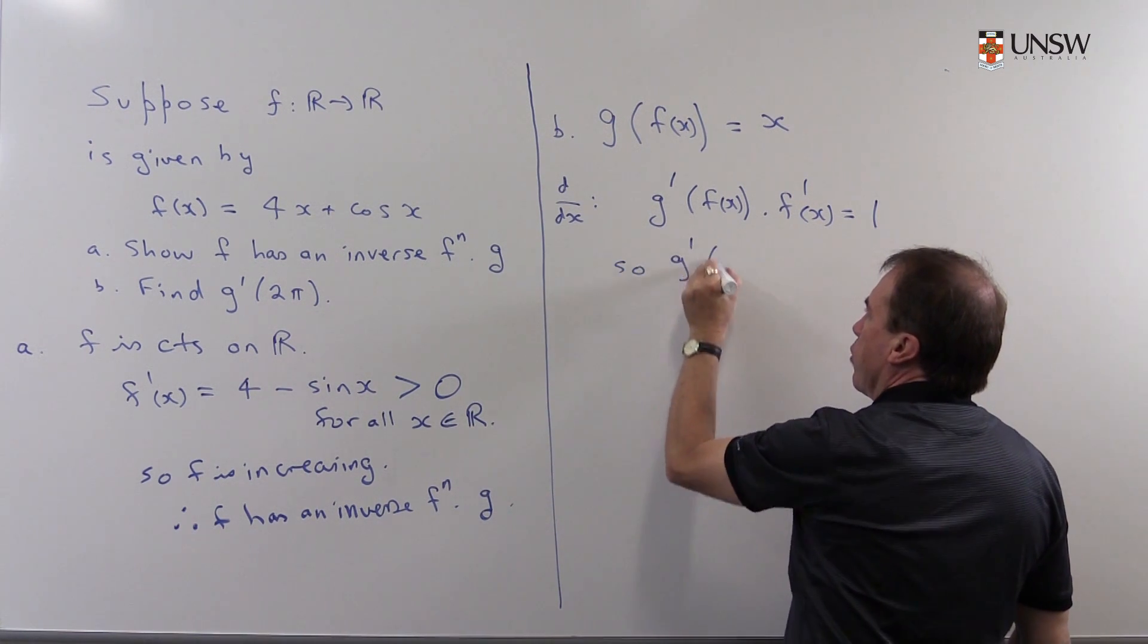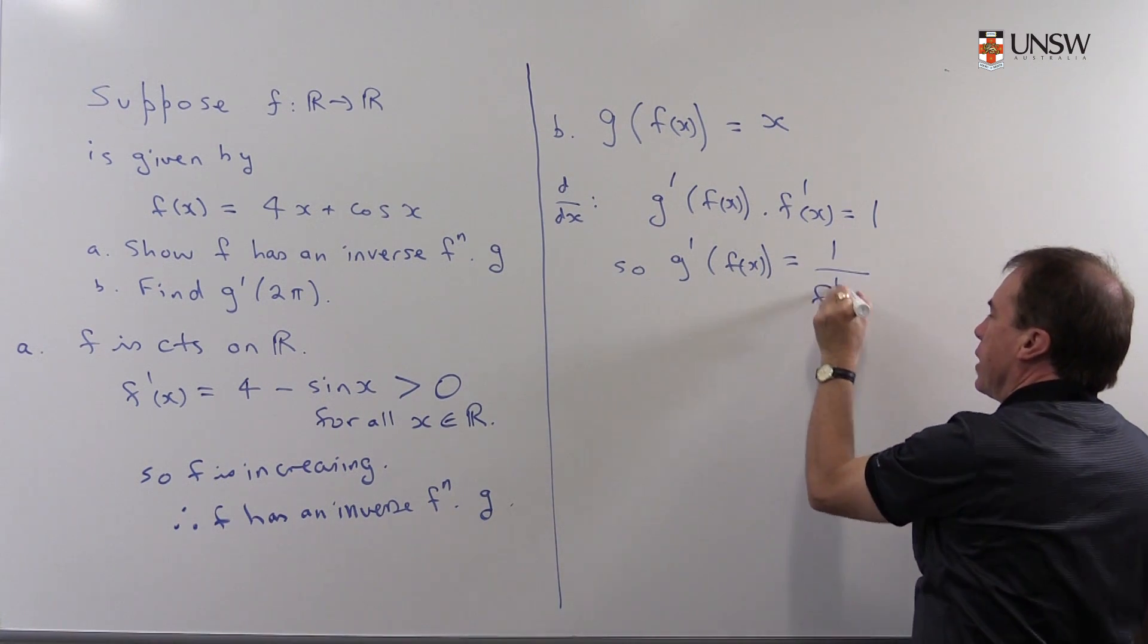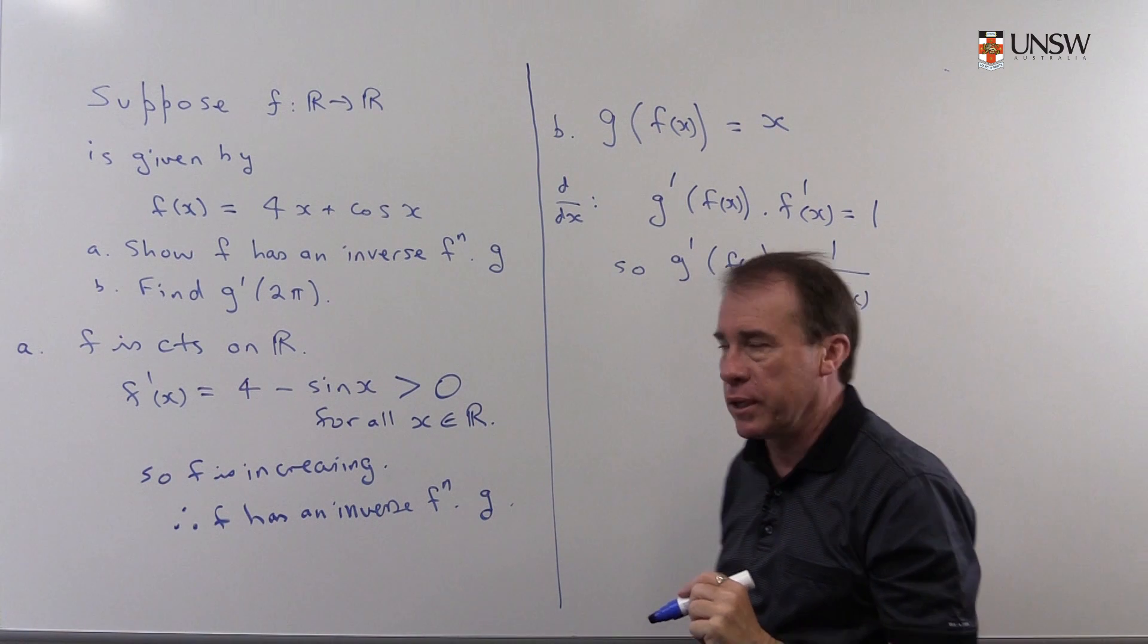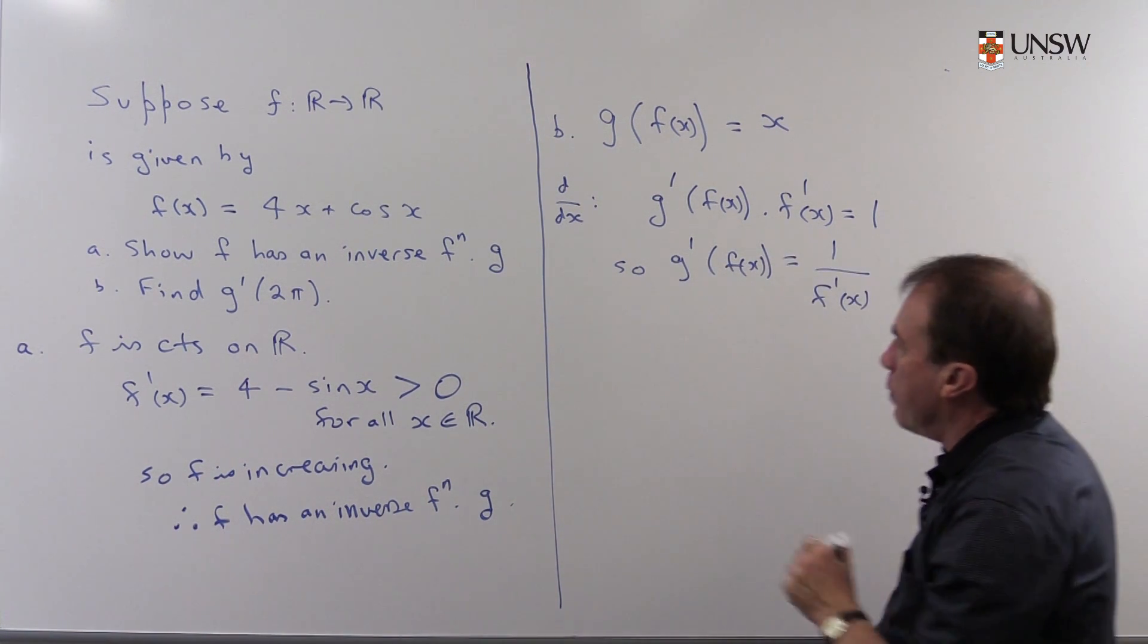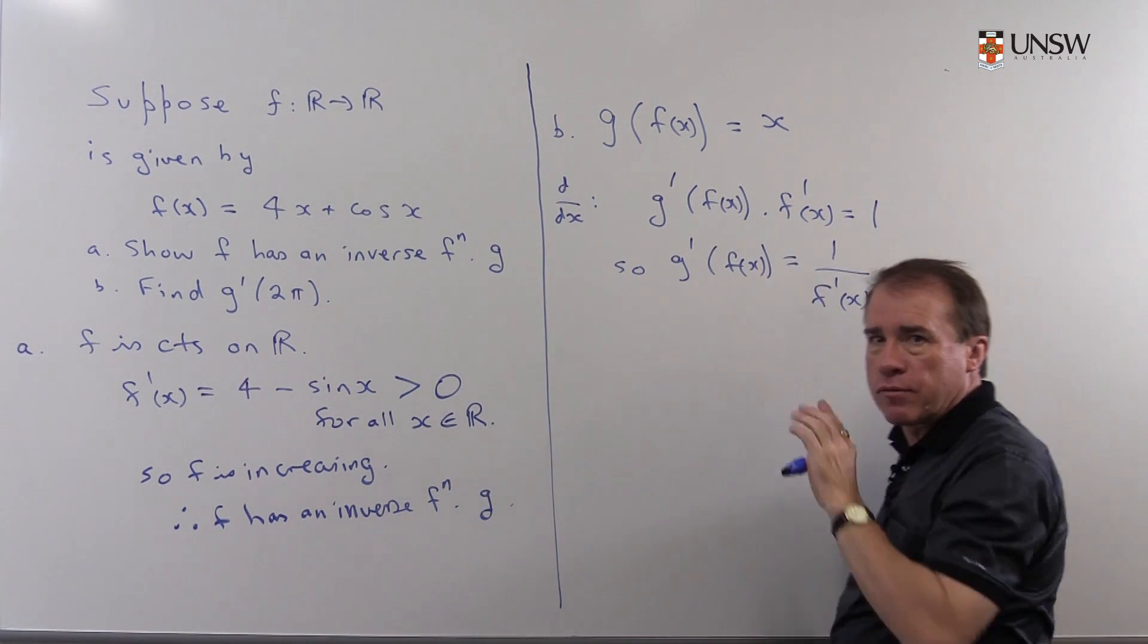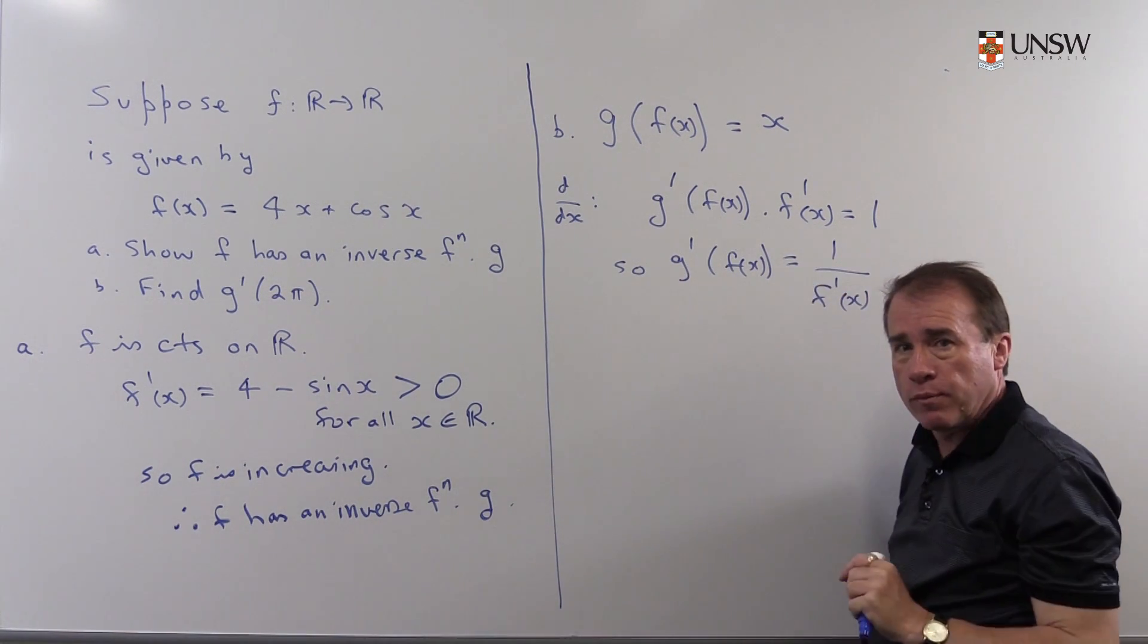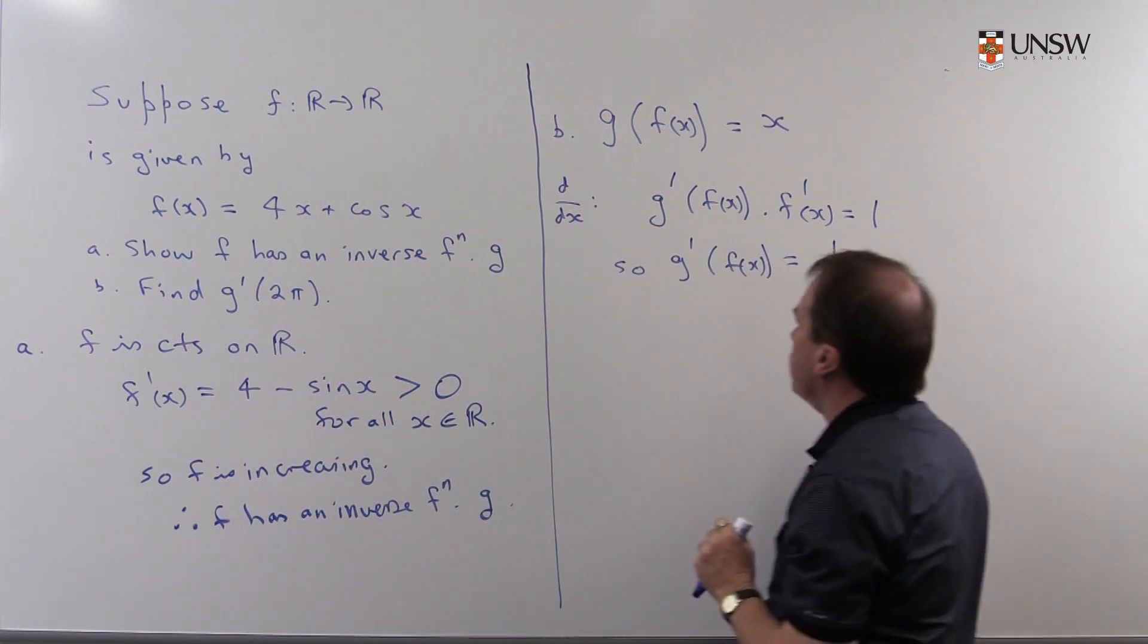So either you learn the formula. Here it is: it's 1 over f'(x). But I like to rediscover it each time, so I haven't got to remember it. Now this gives me a nice formula now for g' in terms of the derivative of f. And happily, it's just the reciprocal of that. But I'm going to compare, I'm asked for g'(2π).